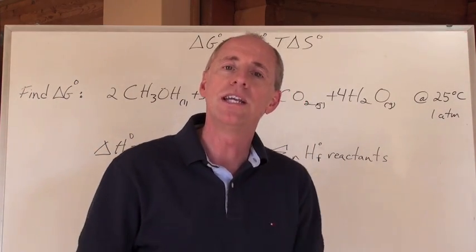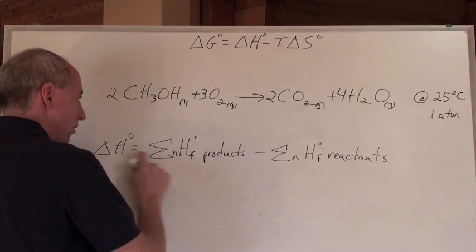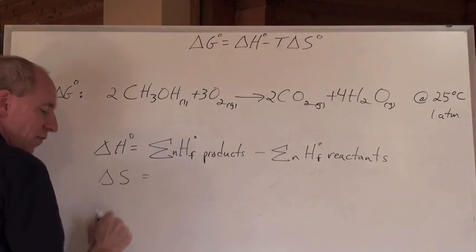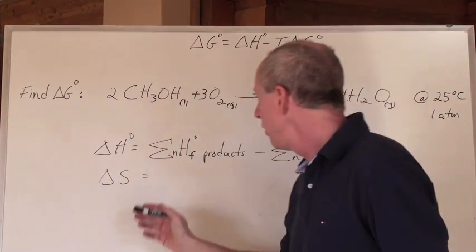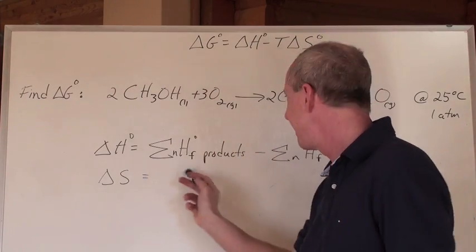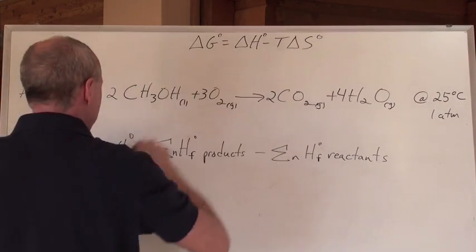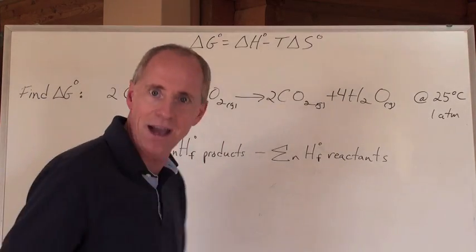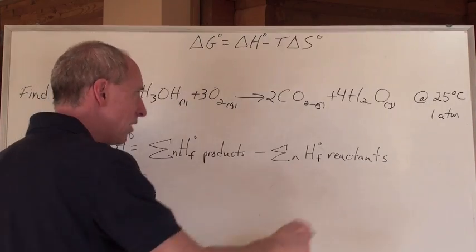Just as you have a molar heat of formation chart to calculate enthalpy, the same approach applies for the entropy value delta S. You can find a chart where you compute the sum of entropies of products minus reactants to get delta S naught. You simply replace the H's with S's and do the same calculation.